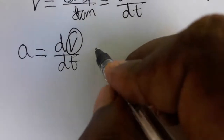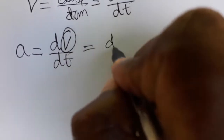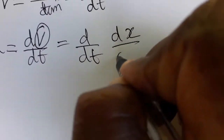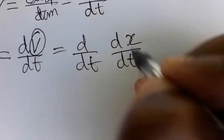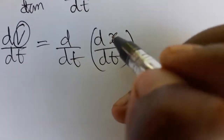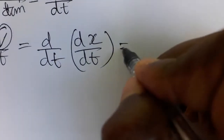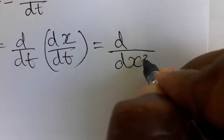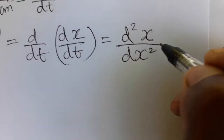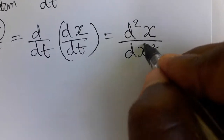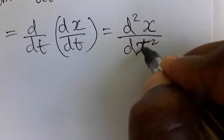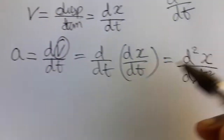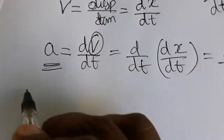Now velocity we know is dx by dt. So applying d by dt to velocity, which is dx by dt, we will get 2 times differentiation — that is d²x/dt². So 2 times differentiation of displacement with respect to time will give us acceleration.